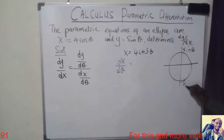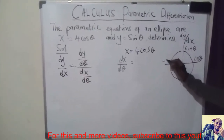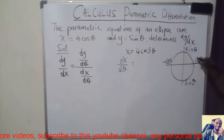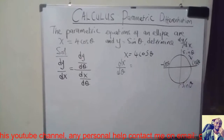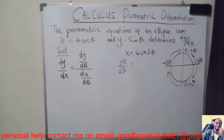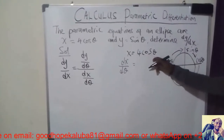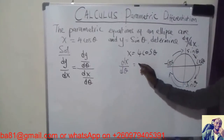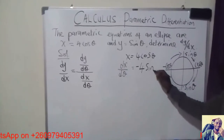On the circle, you put sin theta, minus sin theta, cos theta, and minus cos theta. When differentiating, you go in the clockwise direction. So the derivative of cos theta going clockwise gives minus sin theta. Therefore dx over d theta equals minus 4 sin theta.